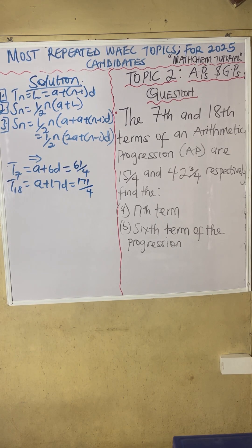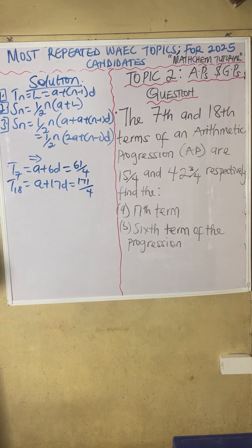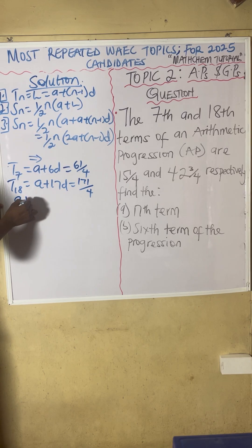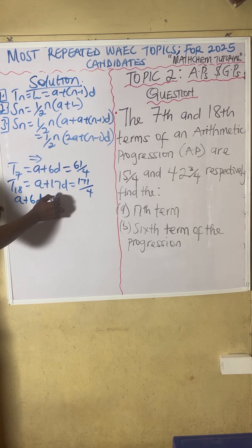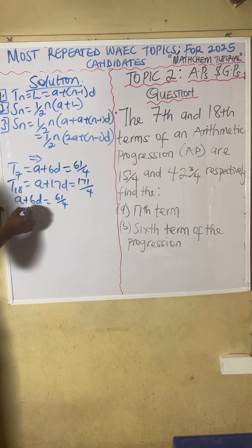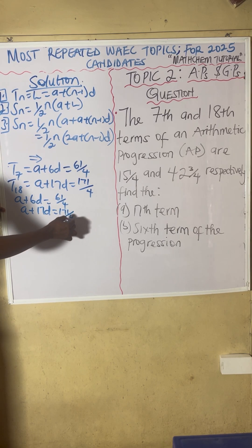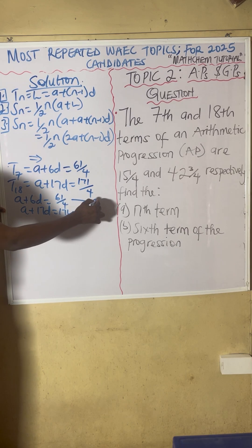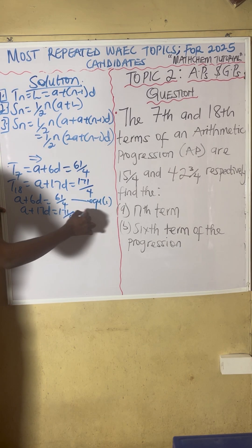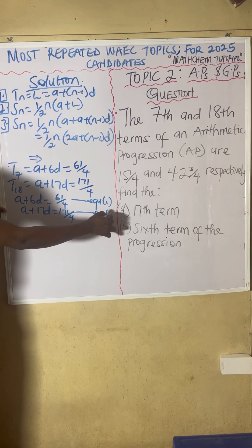Now having this, what are you going to do? You are going to solve it simultaneously. We have two unknowns. So solving simultaneously, we have A plus 6D equals 61 over 4, and also A plus 17D equals 171 over 4. You can label these equation 1 and equation 2.